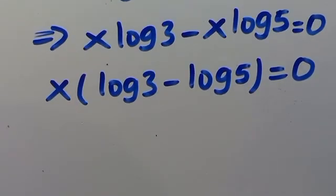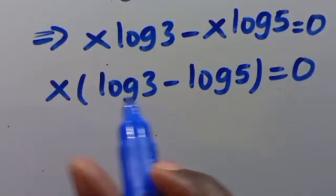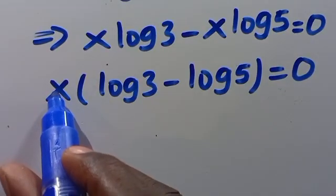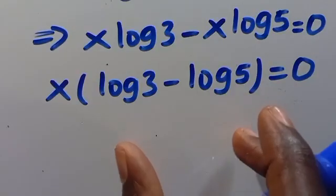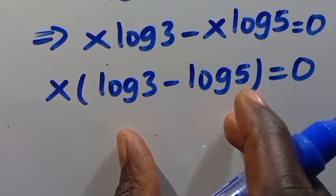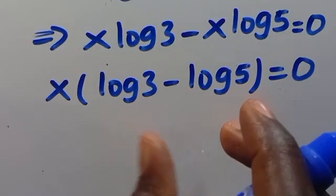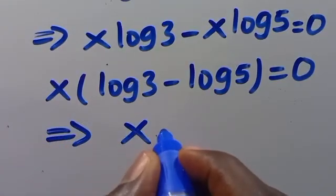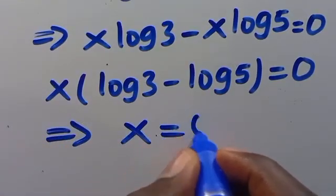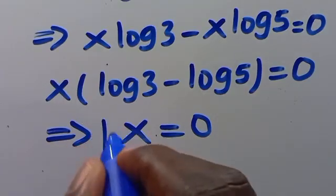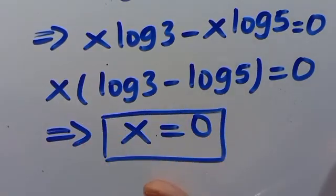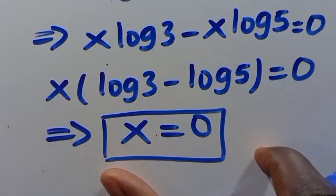So from here, for this expression to equal 0, it is only when x equals 0, because it is clear that the expression in parentheses is a constant. So from here, this implies x equals 0. So x equals 0 is the solution for the problem given to us.